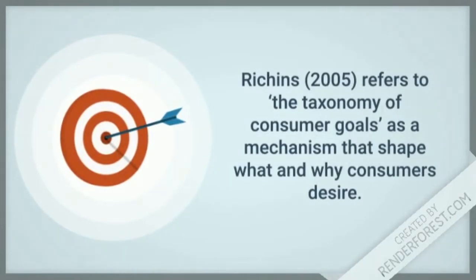Richins refers to the taxonomy of consumer goals as a mechanism that shapes what and why consumers desire. In a world where status, values and our daily lives are focused on consumer culture, our personalities have been shaped and our desires are toward materialism acquisition.